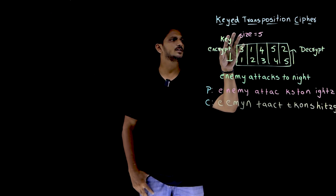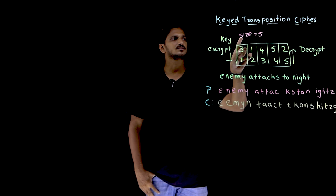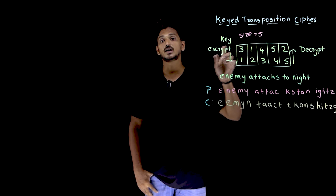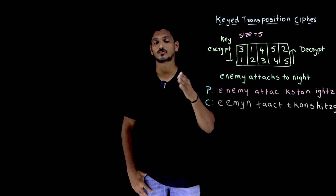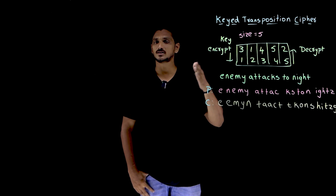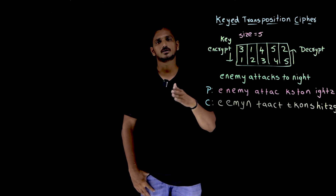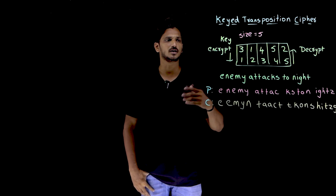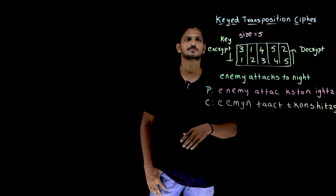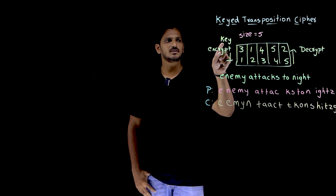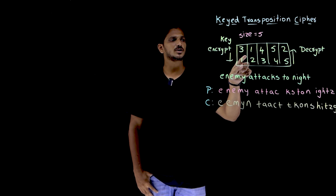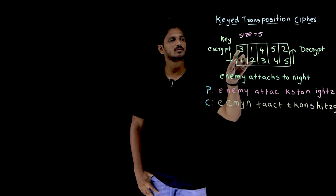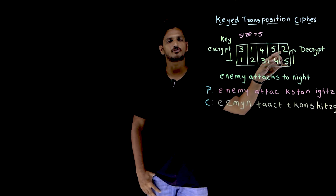In the key transposition cipher, the size is taken as 5. You can take any size — size of 2, size of 5, 6, 7, 8, 9, whatever size you like, you can take that size. The key value will be considered like this: because the size is 5, the key will be of length 5.